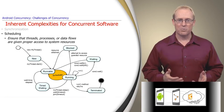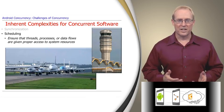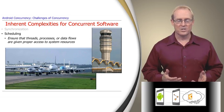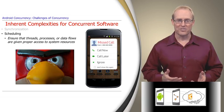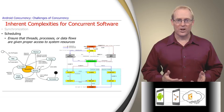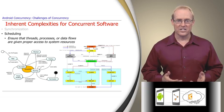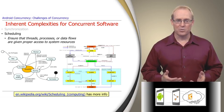Scheduling ensures that threads, processes, or data flows are given proper access to system resources. For example, air traffic controllers need to schedule the arrivals and departures of airplanes based on limited resources such as gates and runways. Likewise, the Android scheduler must ensure that an emergency call isn't missed just because the user is playing Angry Birds. Getting all this right is hard since there are many states to manage in concurrent programs, and it's hard to keep track of them all.